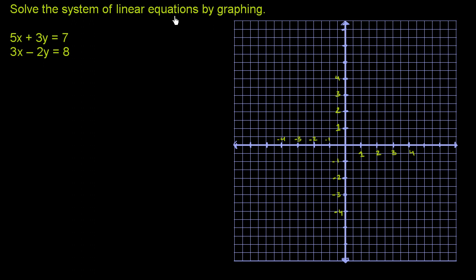Solve the system of linear equations by graphing. They give us two equations: 5x plus 3y is equal to 7, and 3x minus 2y is equal to 8. When they say solve the system of linear equations, they're really just saying find an x and a y that satisfies both of these equations.